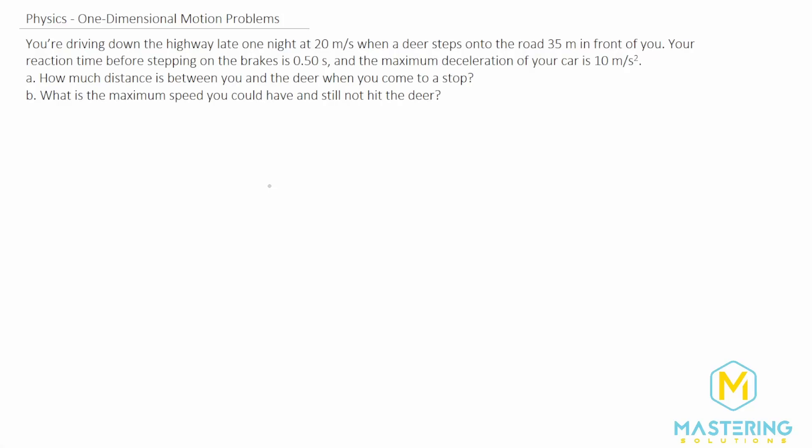Welcome to Mastering Solutions. In this problem, they tell us that we're driving down a highway late at night and we're going 20 meters per second when a deer steps out on the road 35 meters in front of us. Our reaction time before we step on the brakes is half a second, and the maximum deceleration of the car is 10 meters per second squared. For part A, what is the distance between you and the deer when we come to a stop? For part B, what is the maximum speed we could go and still not hit the deer?